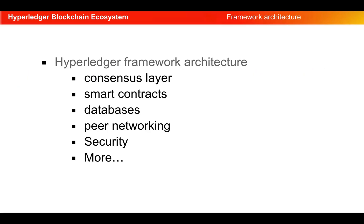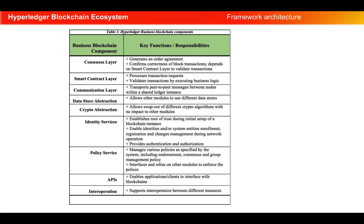The Hyperledger framework architecture focuses on these main business blockchain components: consensus layer, smart contracts, database, peer networking, security, and many more. In this slide you can see the main business blockchain components, their key functionalities, and responsibilities. Please go through this slide to understand the components and their responsibilities. We will cover several of these blockchain components as we move ahead learning Hyperledger Fabric.